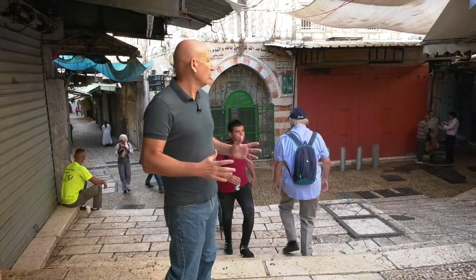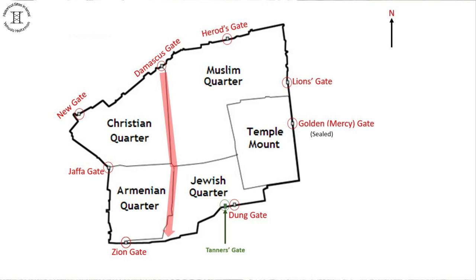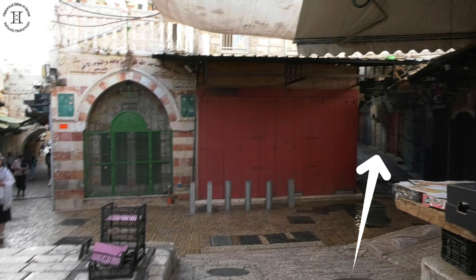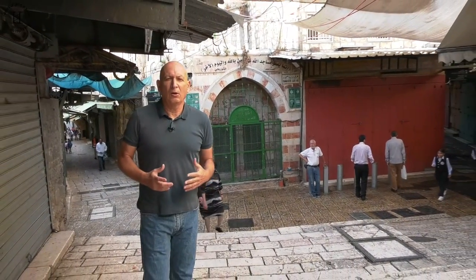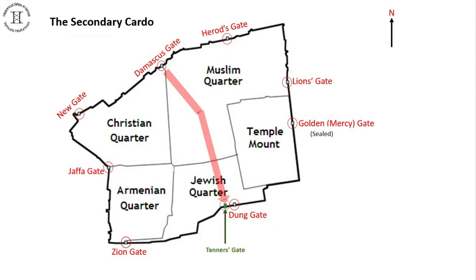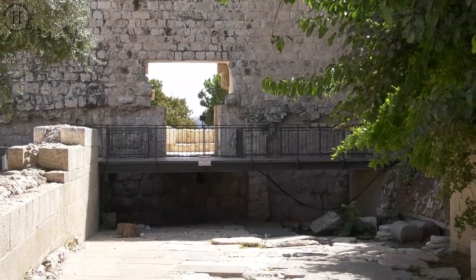Two streets were paved from the columned plaza, originating right here. The two streets crossed the city on a north-to-south axis. One street is the upper western cardo — that is the one on the right — and the second street is the eastern cardo, built along Haggai Street, where Haggai in Hebrew means wadi. You can see it at the end of Tanner's Gate, and of course you are invited to watch the video on Tanner's Gate.